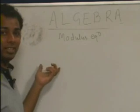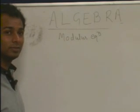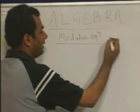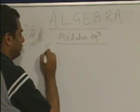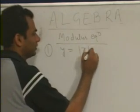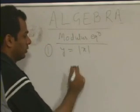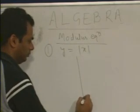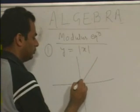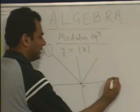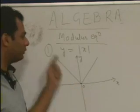The next topic in modulus equations is the graph of mod. The graph of y equal to mod of x is a standard V-shaped graph with the vertex at the origin. The x-axis and y-axis are as usual.